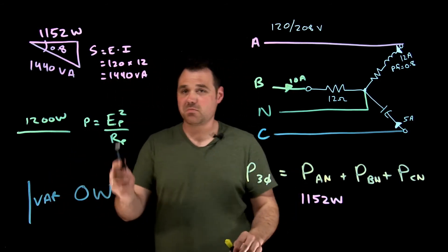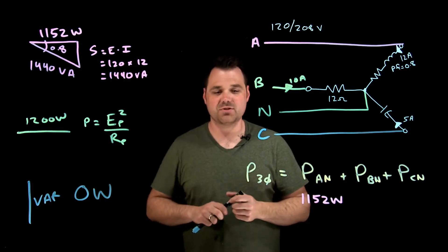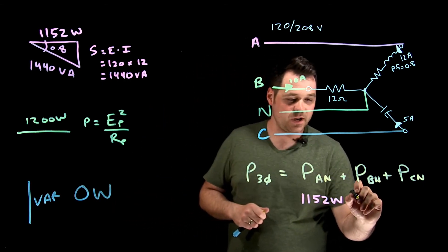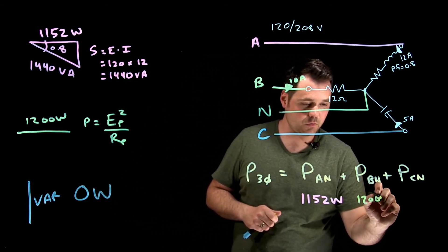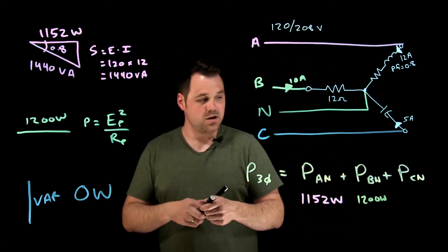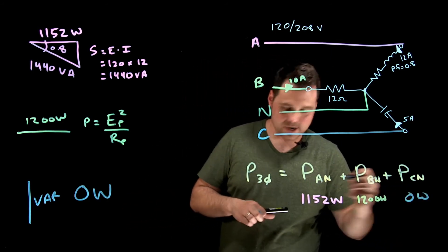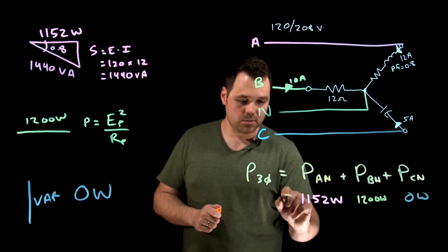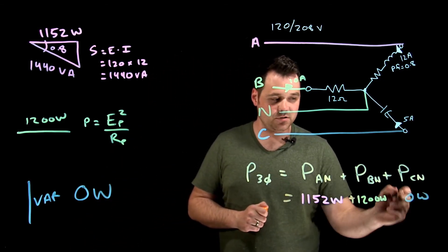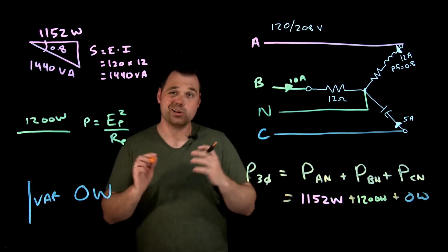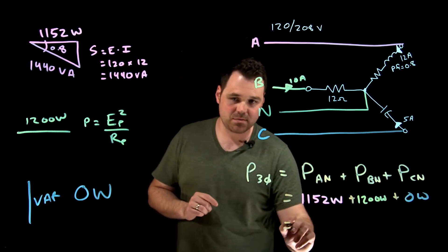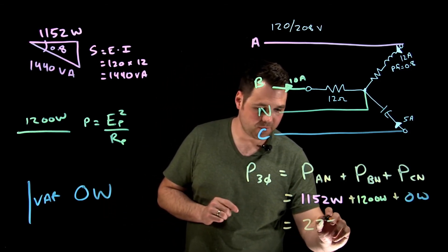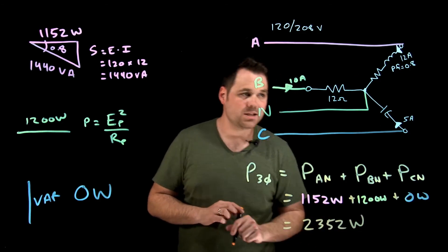So now we can take that. Capacitor, pure capacitor is going to have zero watts. We said I have 1200 watts in phase B, and we said I had zero watts in phase C. So my three-phase power, 1152 plus 1200 plus zero, is going to end up giving me 2352 watts, would be my total three-phase power.